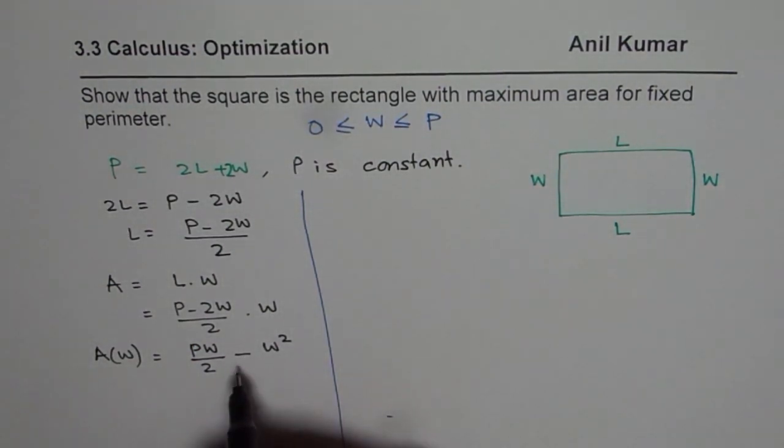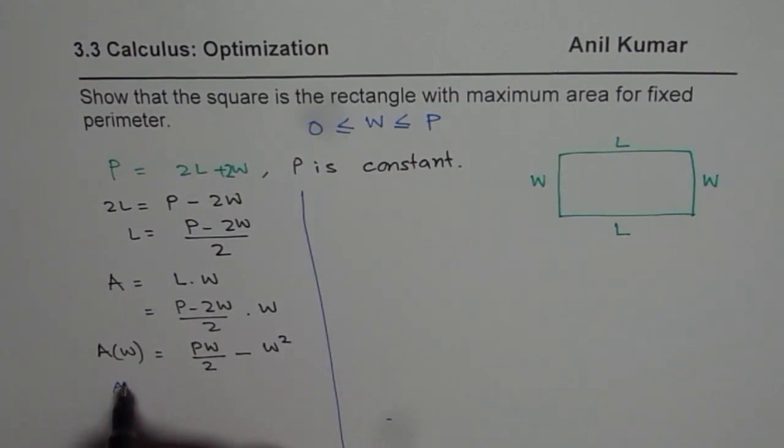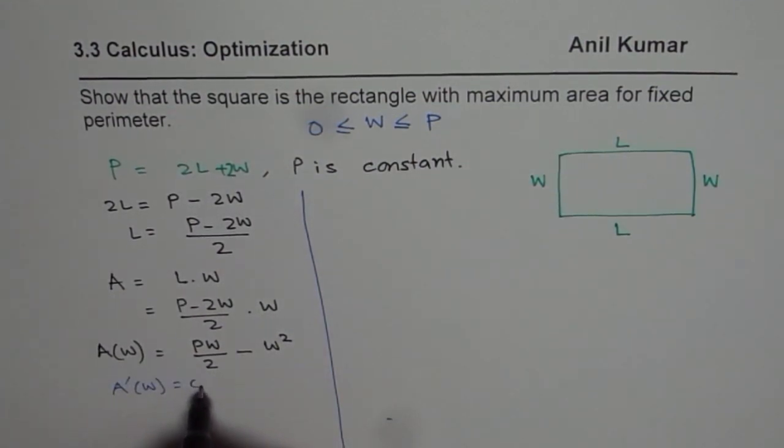The other one we can find using derivative. So we can equate derivative of area to 0 to get our critical number.